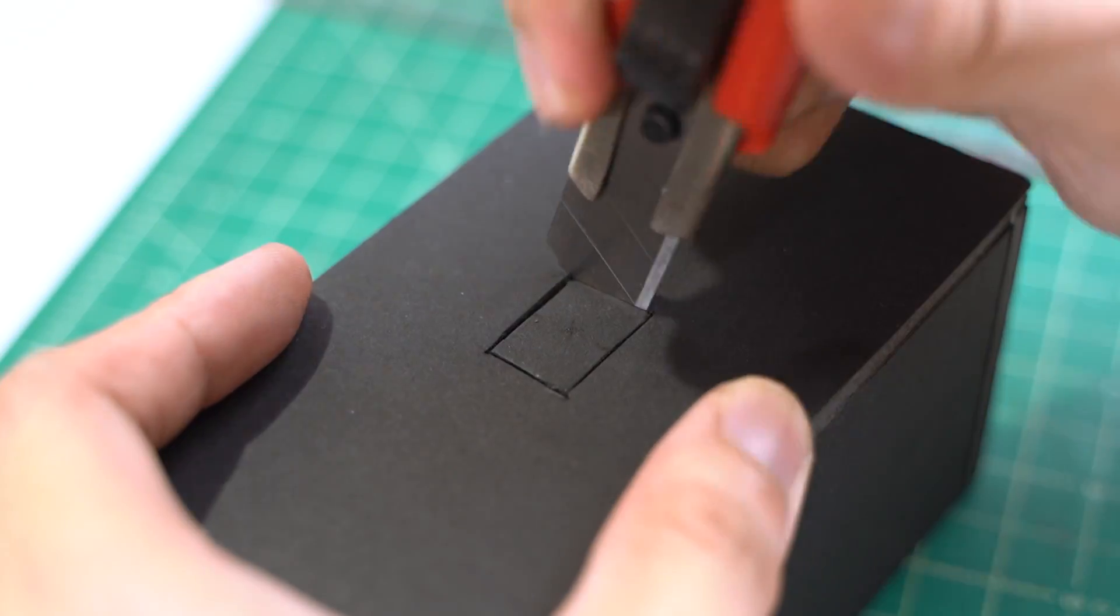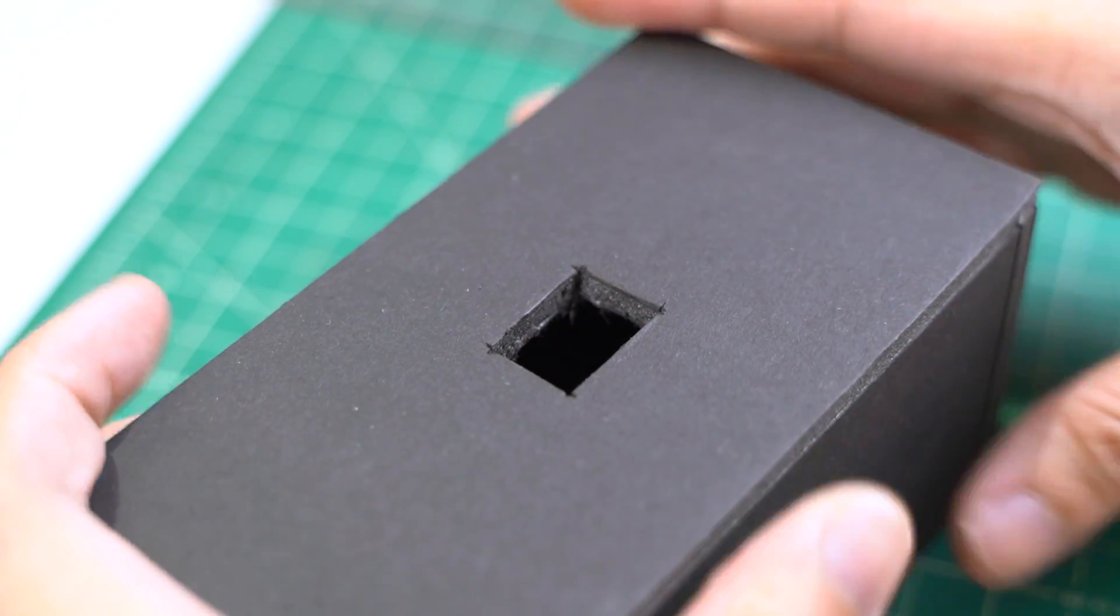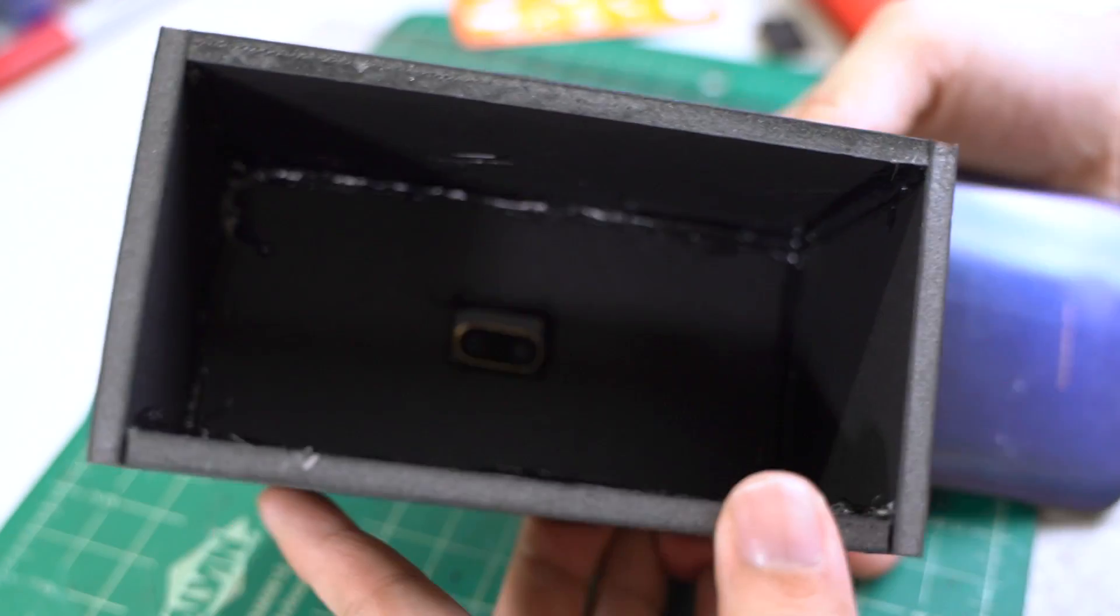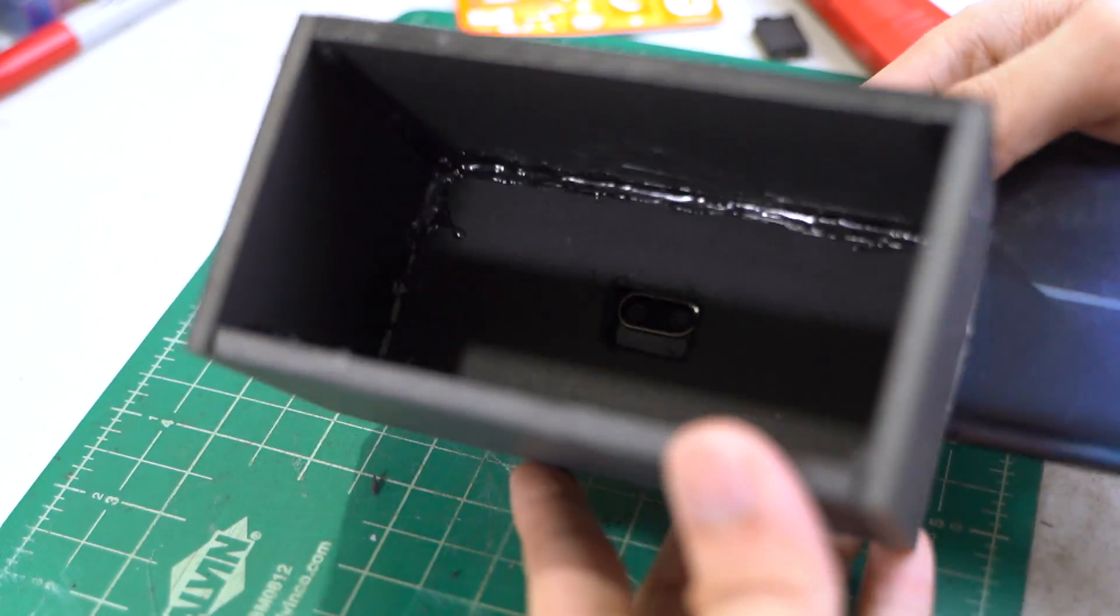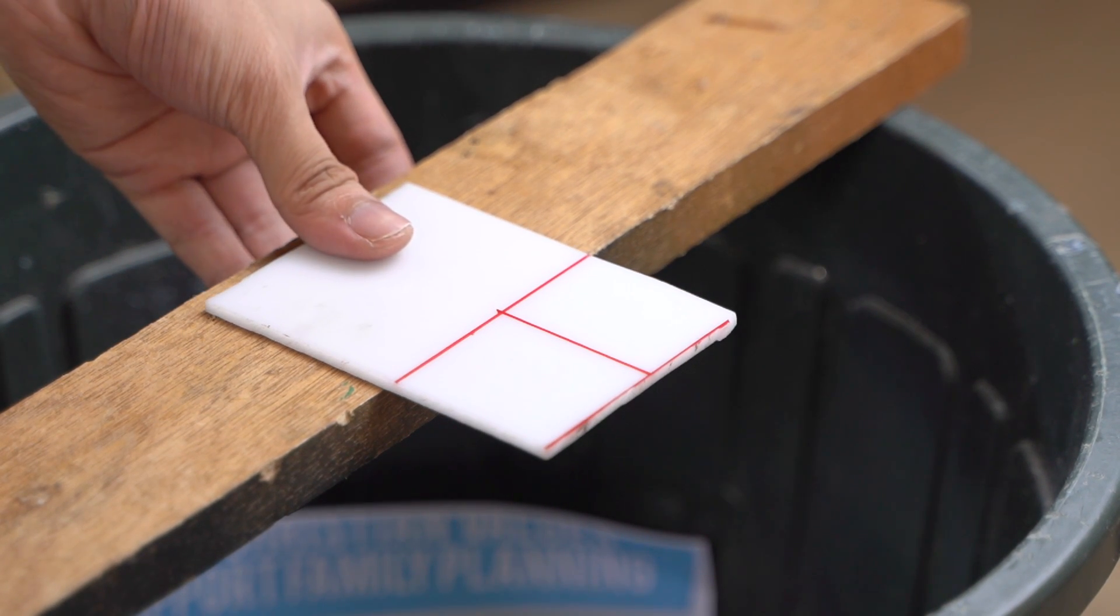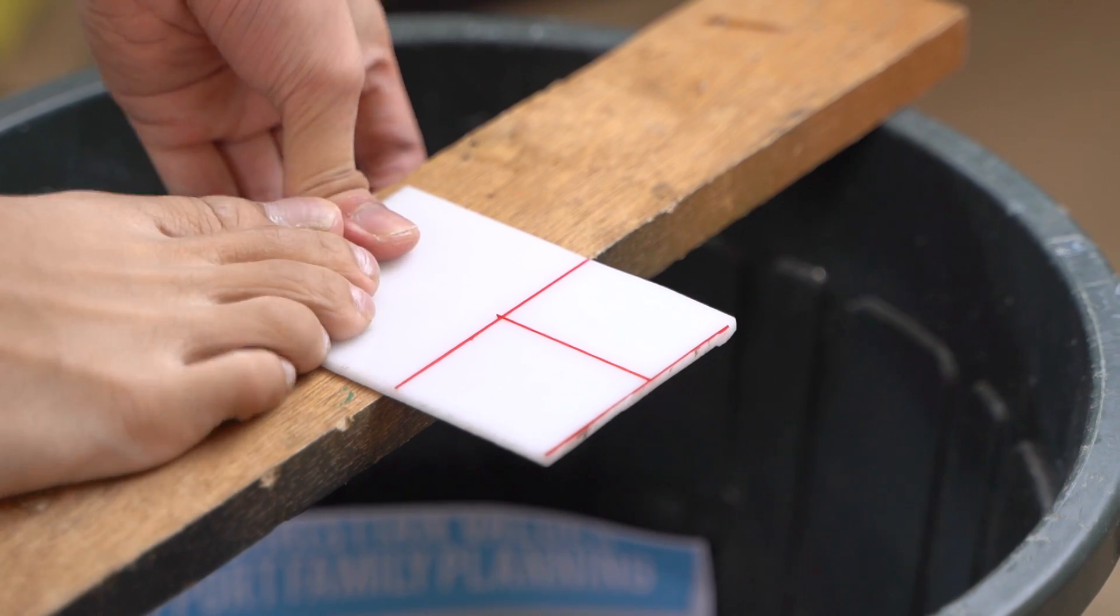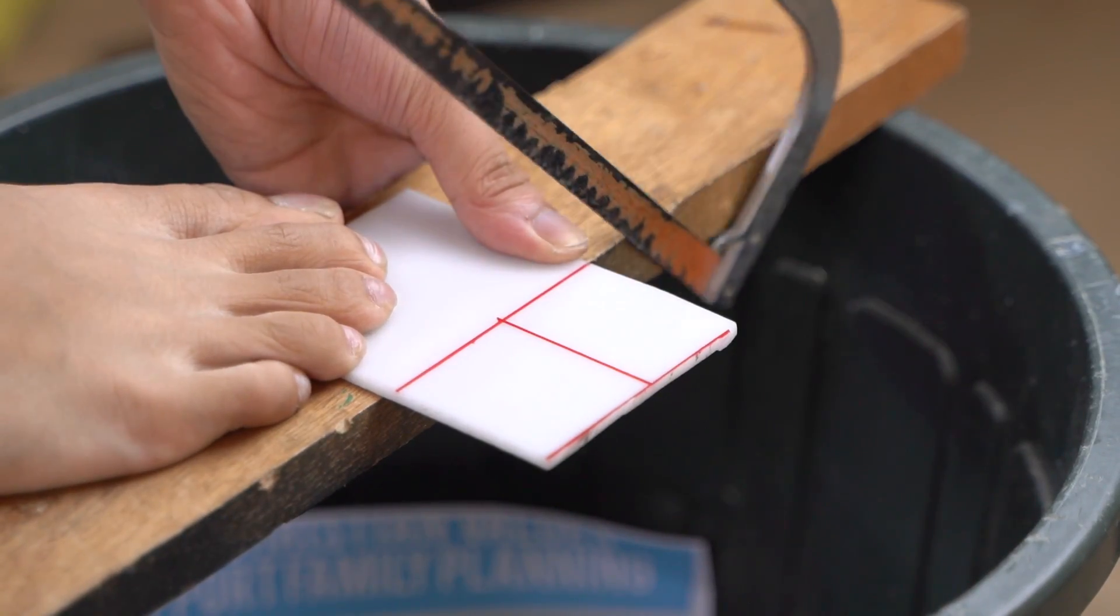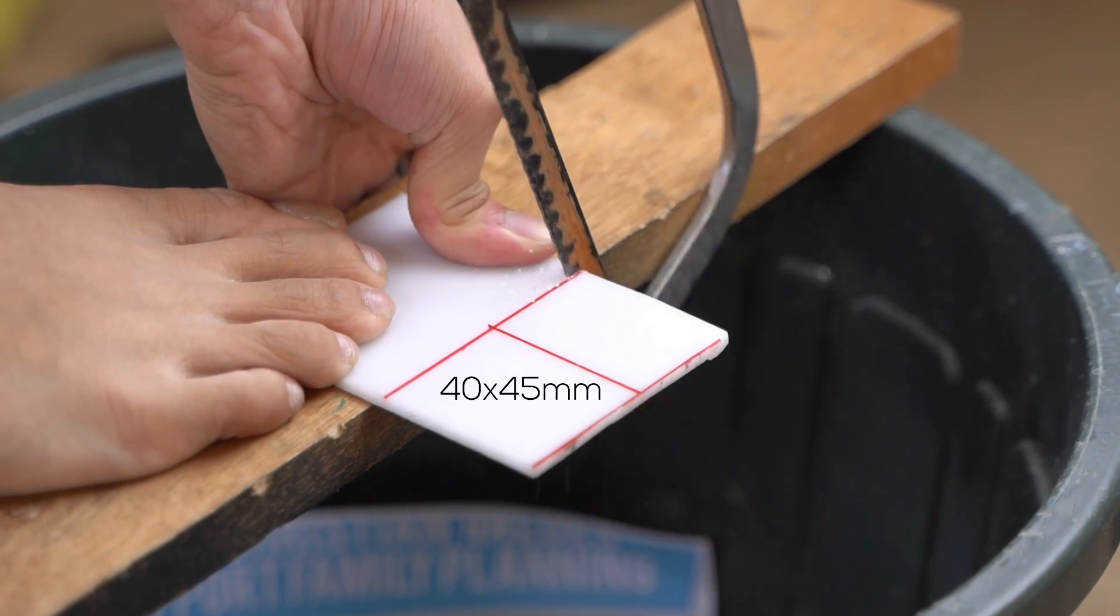Next we'll need to cut a hole at the very center of the top part of the enclosure. Make sure that your phone's camera can see right through. I'm recycling a scrap piece of plexiglass from an old project of mine for my light diffuser. If you don't have one, then you can buy one from your local hardware store. If it's too big, use a hacksaw to cut it down to a 40x45mm rectangle.